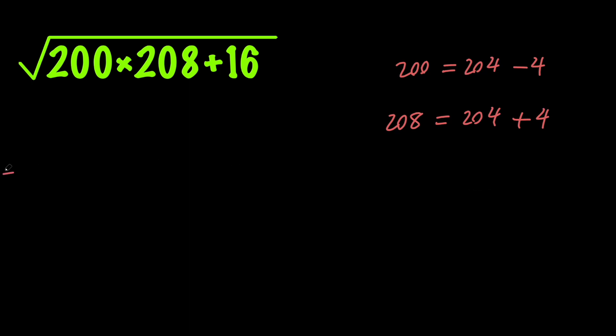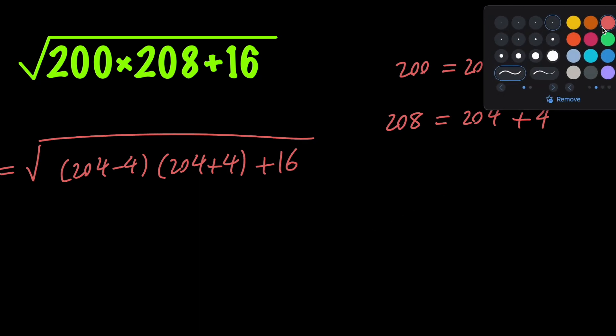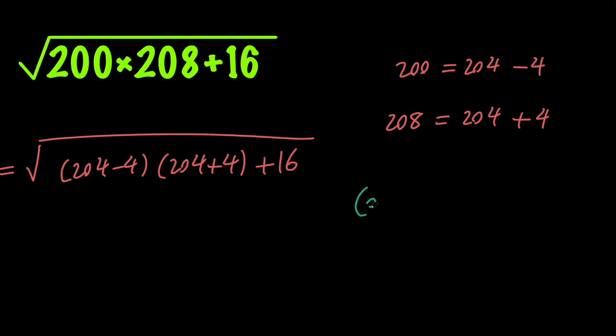So by doing that, we're going to have the square root of 204 minus 4 times 204 plus 4 plus 16. Now, based on the difference of two squares, we know that a minus b times a plus b equals a squared minus b squared.